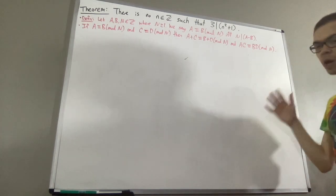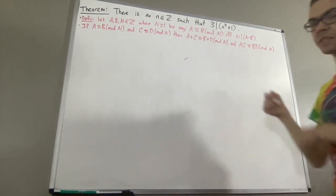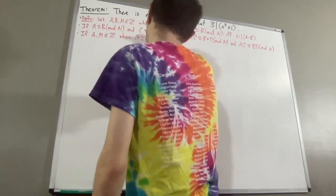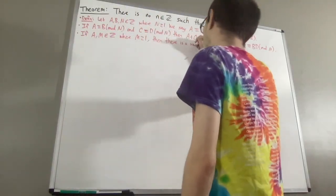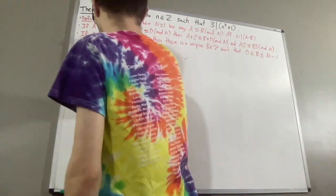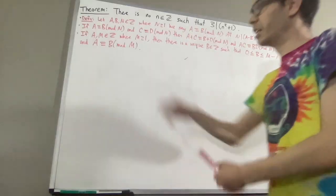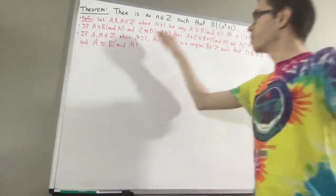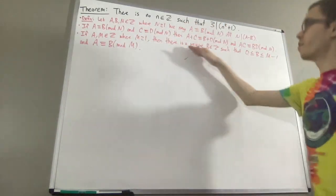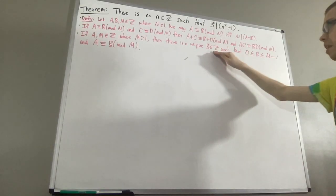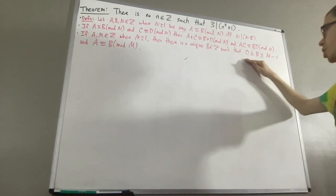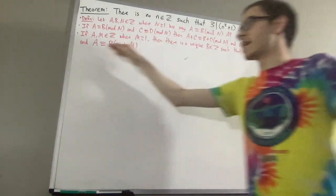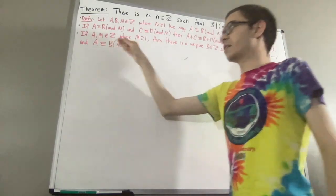Another property that we're going to be using is the following. Given a is an integer and m is a positive integer, then there is a unique integer b such that b lies between 0 and n minus 1, and a is congruent to b mod n.